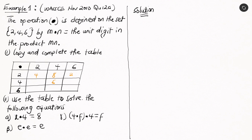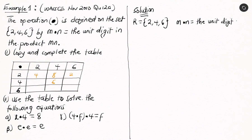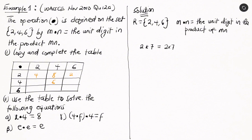We're told the operation is defined on the set {2, 4, 6}. The definition is: m ⊙ n equals the unit digit in the product of m and n. For example, 2 ⊙ 7 means we multiply 2 × 7 = 14, and we just pick the unit digit, which is 4.